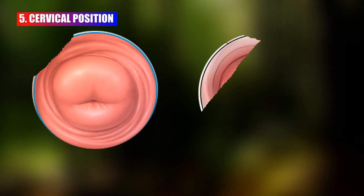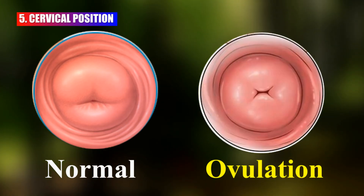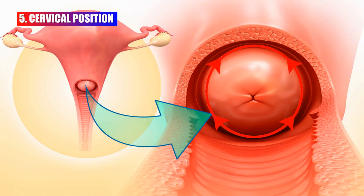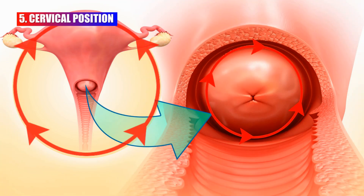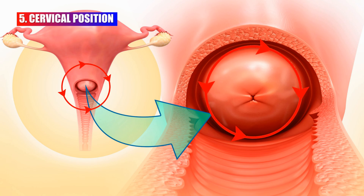Women's cervix may be larger than regular at ovulation time. If you insert a finger into your private area you can find a small nub. This nub is your cervix.